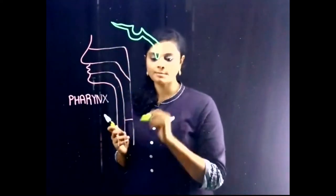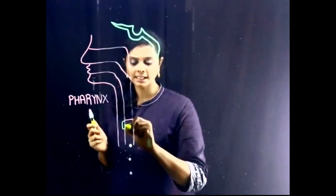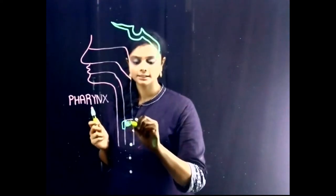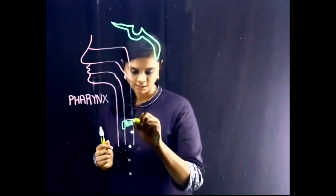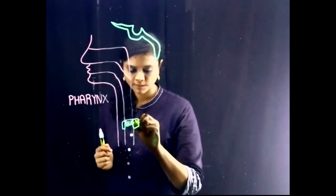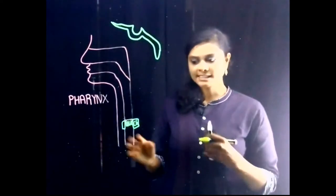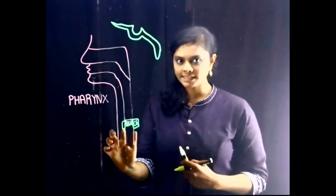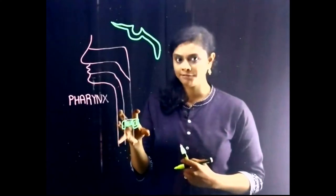When it comes to the inferior boundary of the Pharynx, it is bounded by the cricoid cartilage and esophagus. Inferiorly we can also see it is bounded by the sixth cervical vertebra, C6. So the sixth cervical vertebra, cricoid cartilage and esophagus are the boundaries inferiorly.